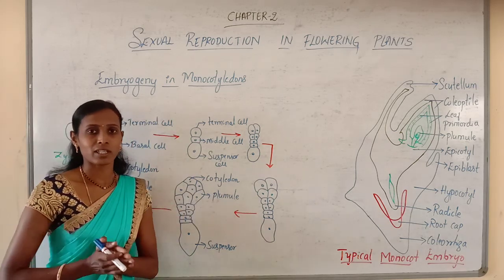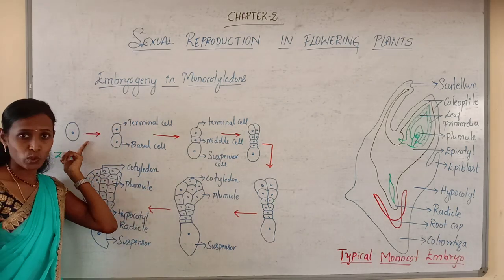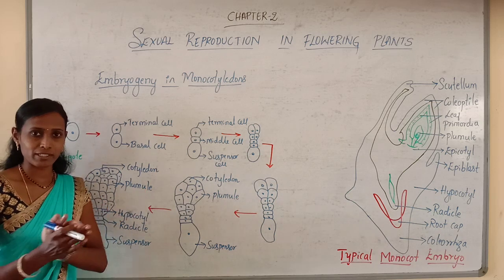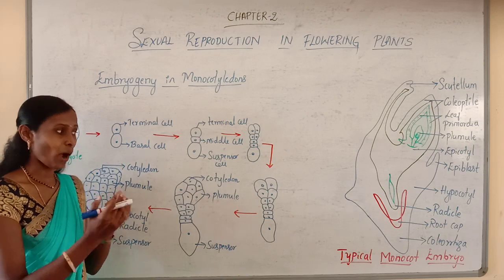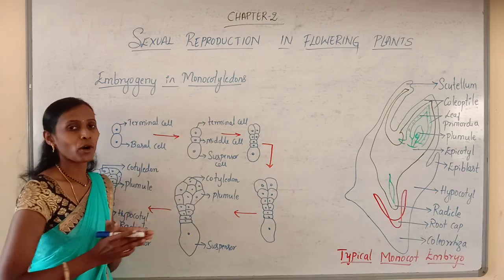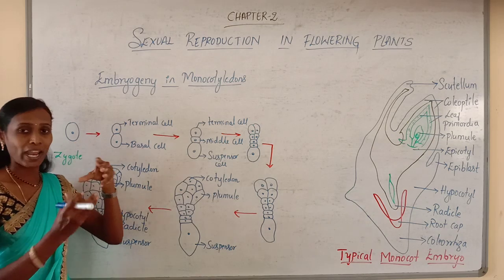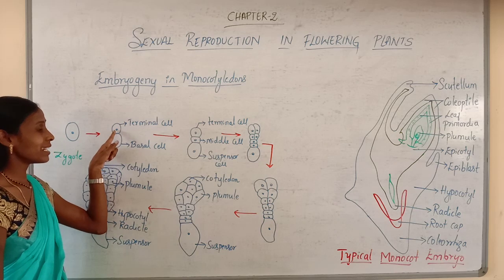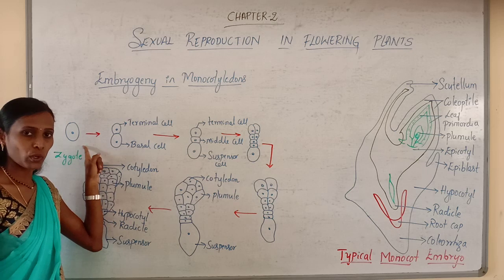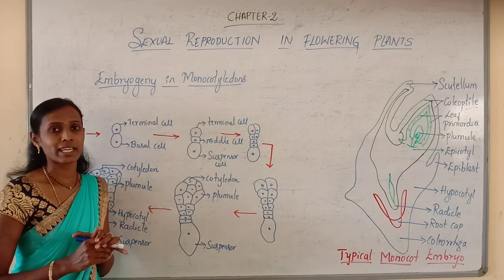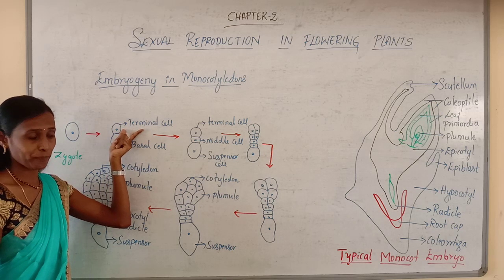Embryogeny in monocotyledons is quite similar to that in dicotyledons. Initially, the zygote will elongate and divide by a transverse division, resulting in the formation of two cells. One is called the basal cell and the other is called the terminal cell.